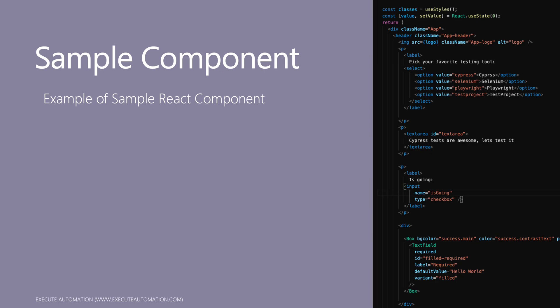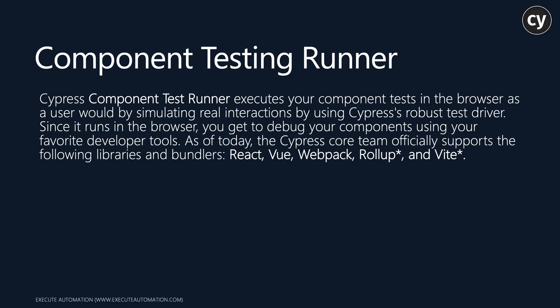This won't be a session on how to work with React applications and create components from scratch. I'm going to create a very simple application using the existing React template via create-react-app, then add bits and pieces of code to make it more realistic for testing purposes, so we can understand how Cypress tests components using its powerful testing framework. Let's also talk about the component test runner.